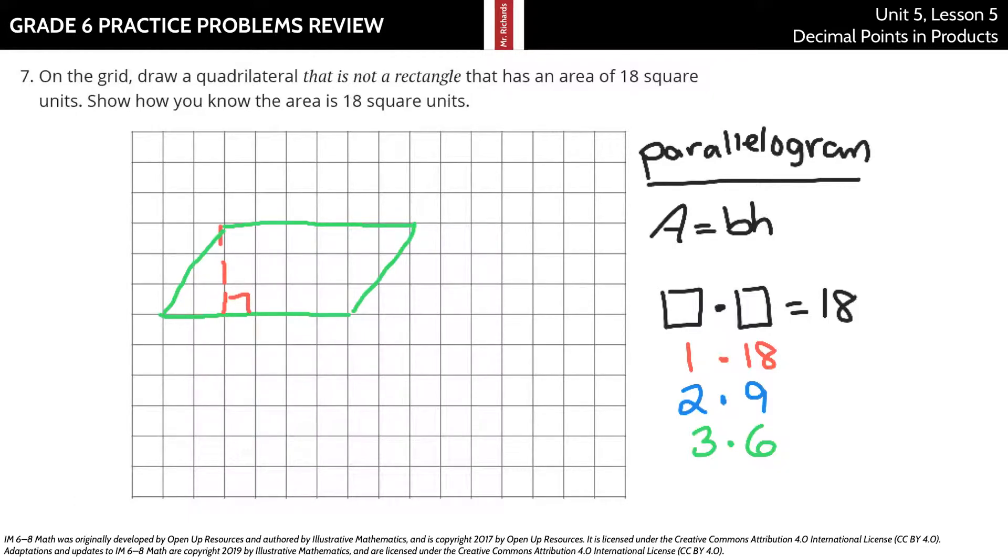Our two by nine, you can do something very similar here. If we just draw in two units here, we can then go up nine. One, two, three, four, five, six, seven, eight, nine. And then go two units over from there.